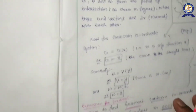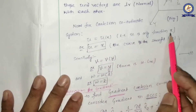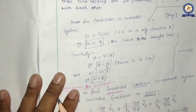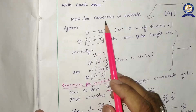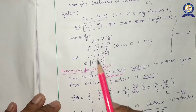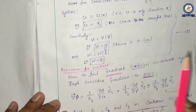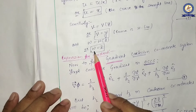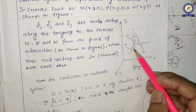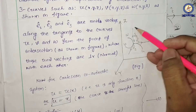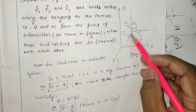Hence, for the Cartesian coordinate system: u, which is a function of x, will be considered as simply x — meaning the curve is a straight line. Similarly, v, which is a function of y, will be written as v equal to y — also a straight line. And w, which is a function of z, will be represented as w equal to z — also a straight line. The corresponding unit vectors are i cap, j cap, and k cap.